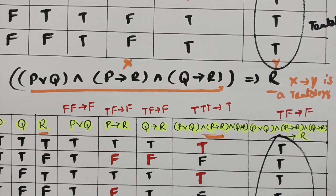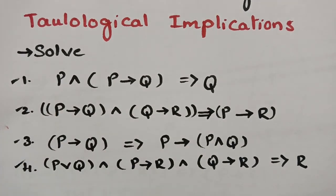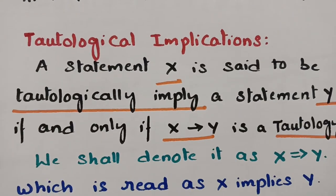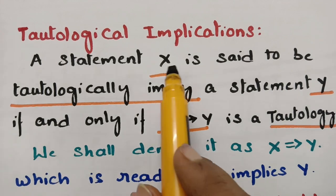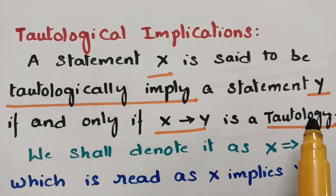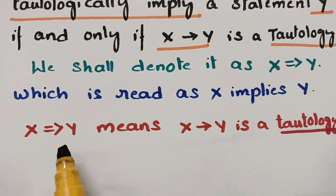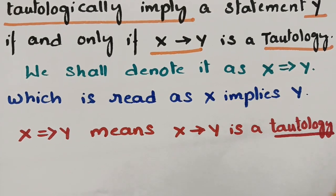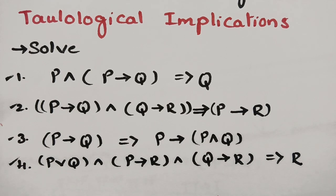That's how we solve all four examples. Tautological implication means: a statement x tautologically implies statement y if x implies y is a tautology — meaning the end statements are all true. We denote this as x double implies y. Please practice these problems, subscribe, and share the knowledge. Thank you so much for watching!